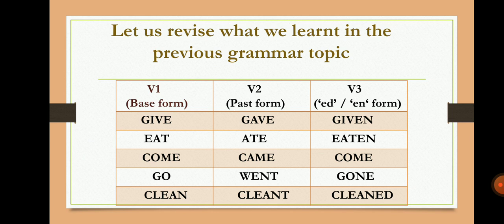For example, 'give' is the base form. The past tense of give is 'gave,' and in V3 form it will come as 'given.' Second, 'eat' — the past tense is 'ate,' and in V3 form it will come as 'eaten.'